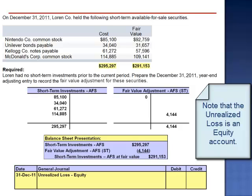Debit the unrealized loss equity account $4,144, and credit the fair value adjustment available-for-sale short-term account $4,144.